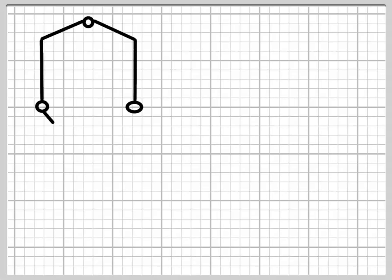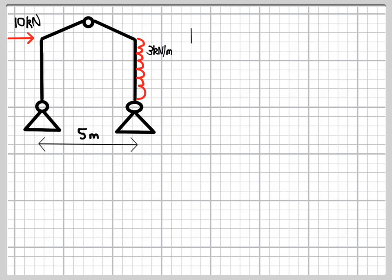This problem is a simple frame, the sort of thing you might see in a supermarket, a B&Q type store. It's got some loads on it, maybe due to wind loading, and the dimensions are as we see here.